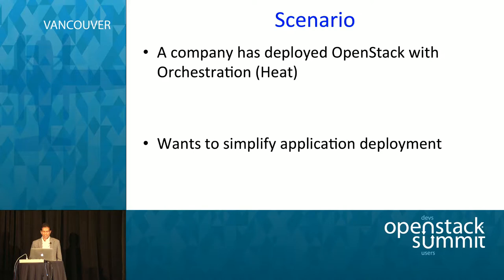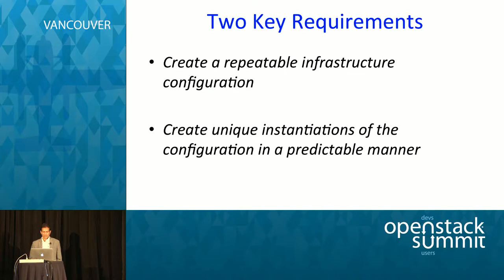Let us look at the scenario. A company has deployed OpenStack with orchestration service and they want to simplify application deployment. They have two key requirements. The first requirement is to create a repeatable configuration for the infrastructure — it is important to know that this is just a configuration; when you create this repeatable configuration, the actual resources are not created at this point. The second is the instantiation of the configuration. If you are familiar with object-oriented technologies, you create a class and at that point your object is not created. When you instantiate it, that is when the actual object is created. Similarly, you create the configuration and the instantiation of that can be done in a predictable manner — and the service does this instantiation.